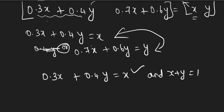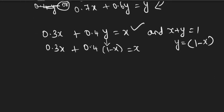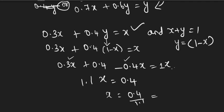Take any one equation — I am taking the first: 0.3X plus 0.4Y equals X. From X plus Y equals 1, I write Y equals 1 minus X and substitute: 0.3X plus 0.4 times (1 minus X) equals X. Expanding: 0.3X plus 0.4 minus 0.4X equals X, which gives 1.1X equals 0.4, so X equals 0.4 divided by 1.1, or equivalently 4 by 11.